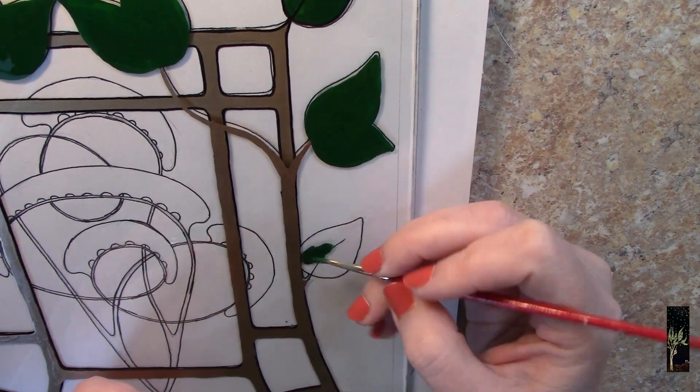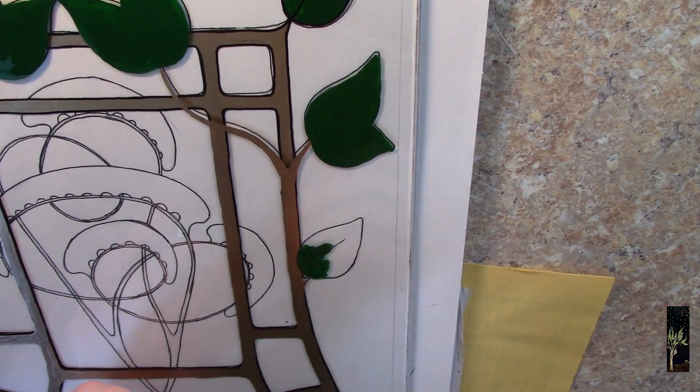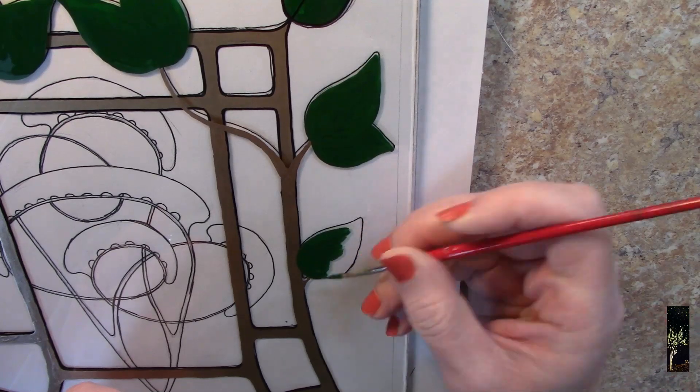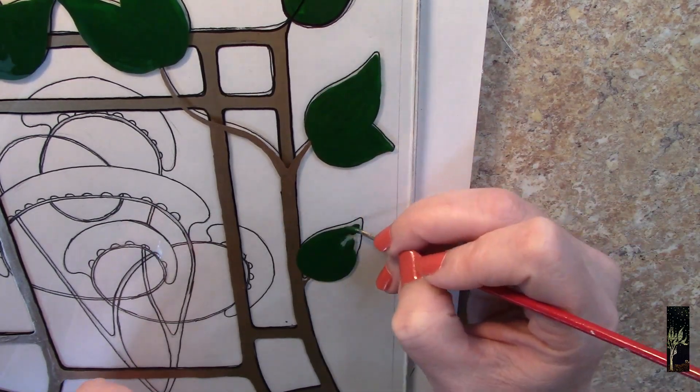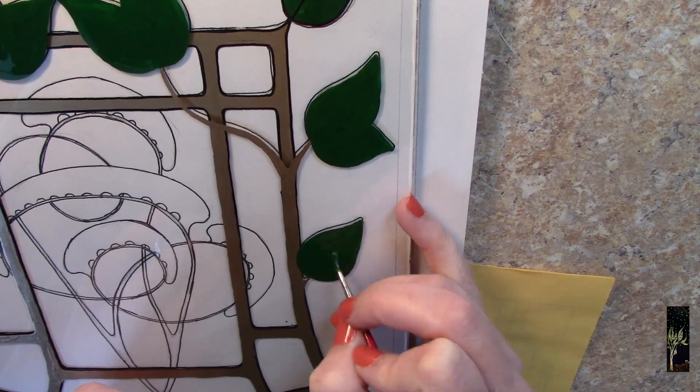Now I'll just wait for the leaves to dry and then I can do the black outlines over all of it, the leaves and the gold part. All right so now I'm going to start painting the first layer on the stained glass itself.